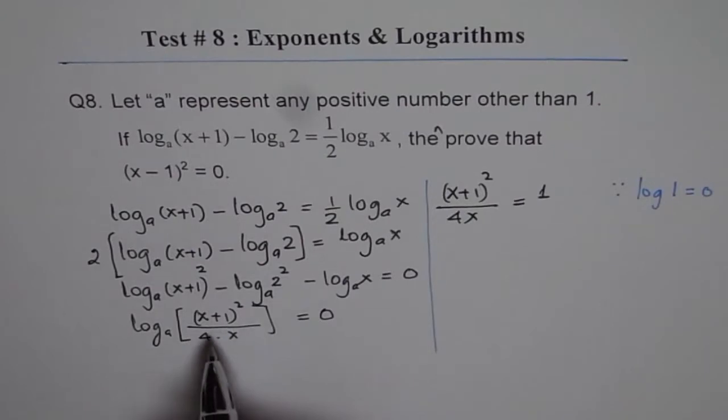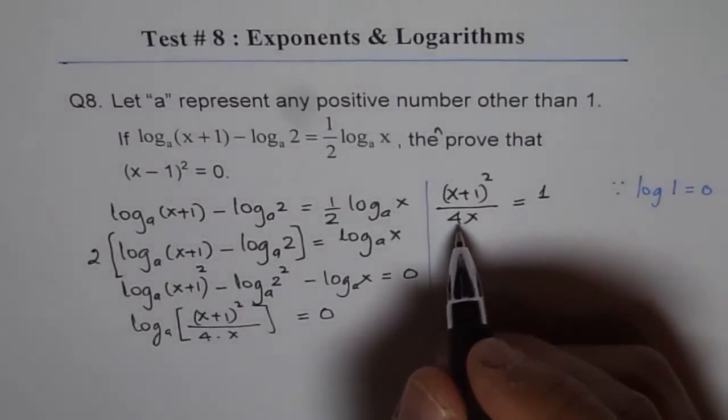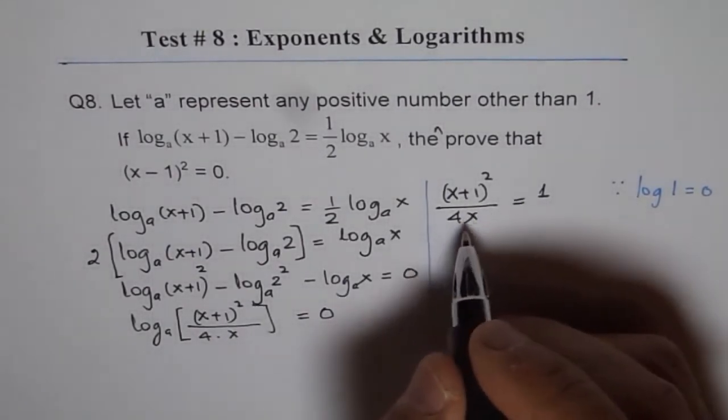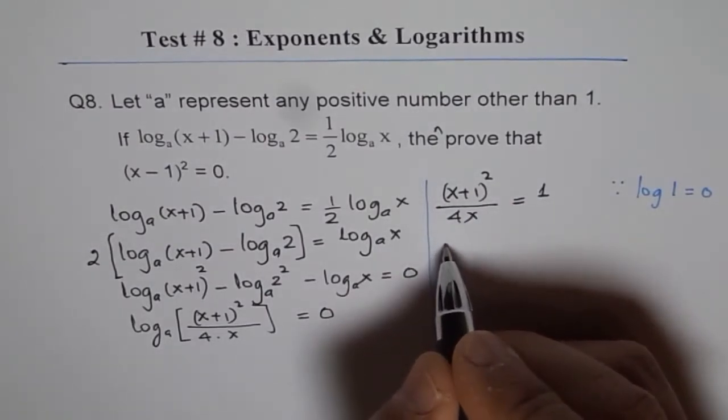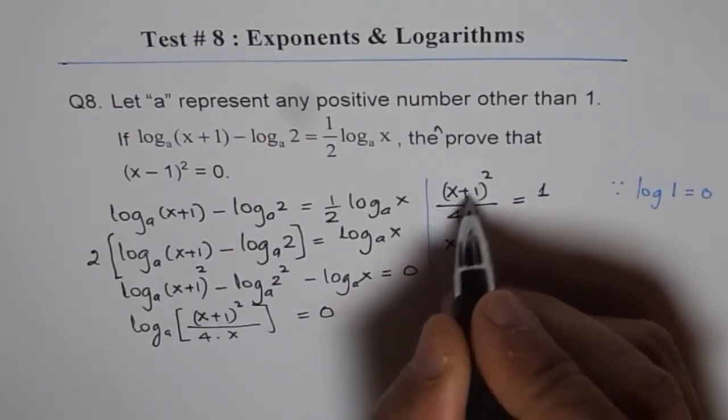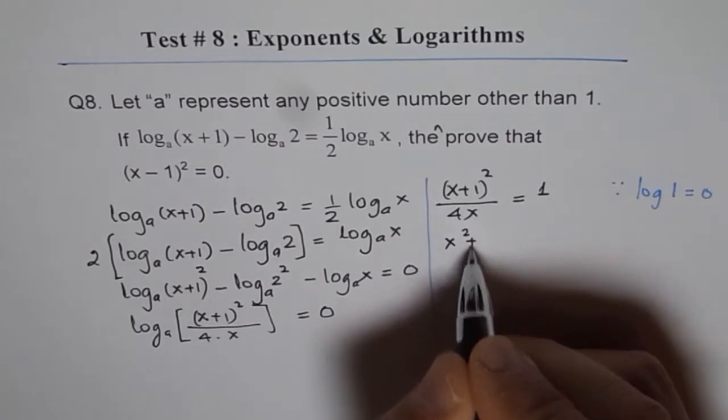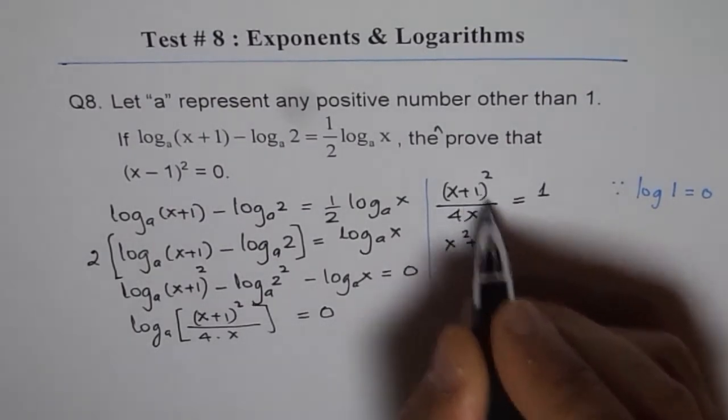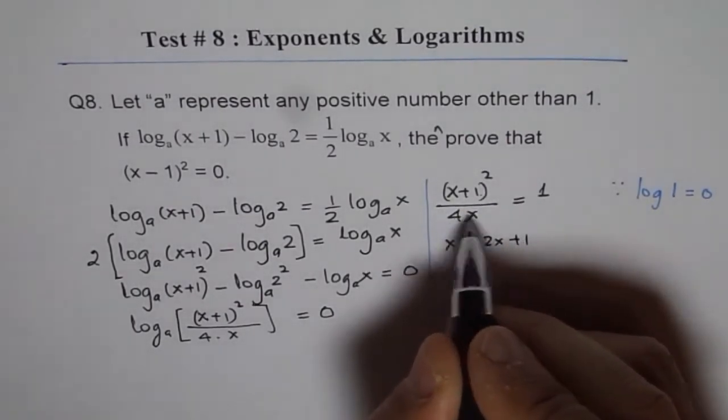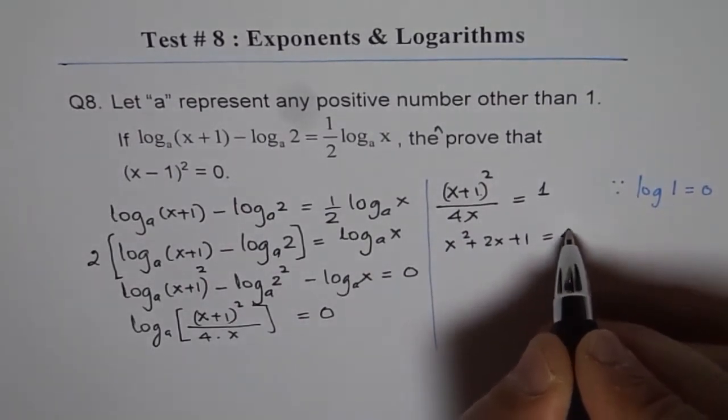Now let's cross multiply and solve. So x plus 1 whole squared, I'm expanding that, x squared plus 2x plus 1 and then I'm multiplying both sides by 4x equals 4x.